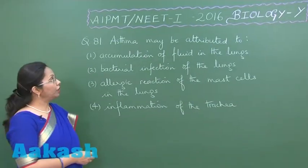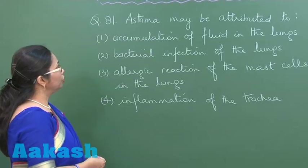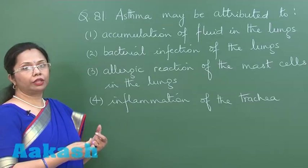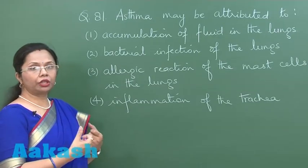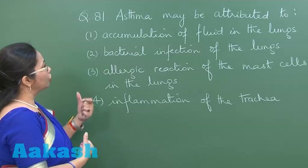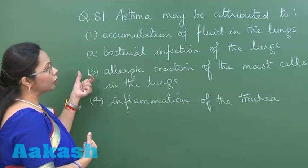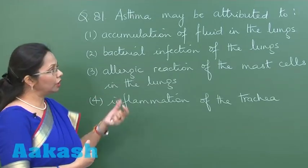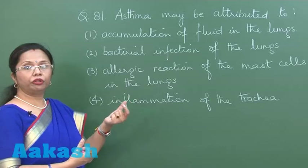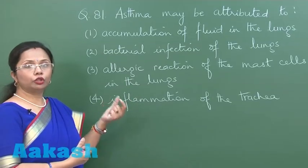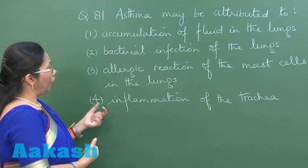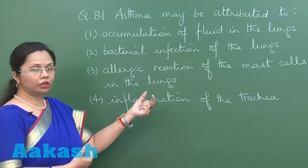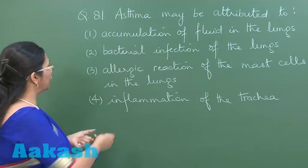Question 81: asthma may be attributed to. Asthma is an allergic disease in which there is constriction in the bronchi or bronchioles. The third choice states this is an allergic reaction of the mast cells in the lungs. When mast cells are stimulated they release histamine, which causes bronchoconstriction. There would be inflammation of the bronchial passage, not the trachea.